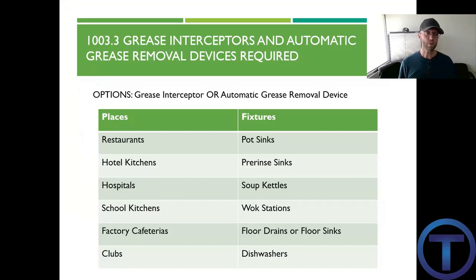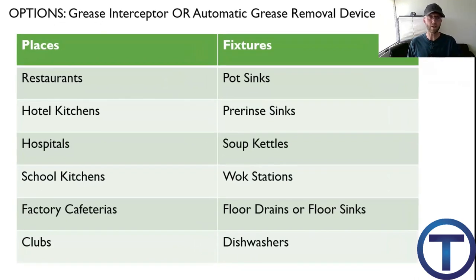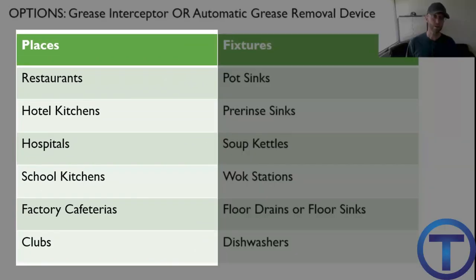Just a quick caution: if you're ever involved with servicing an operational grease interceptor like this, you need to understand that these are rancid and it will likely ruin your lunch. Section 1003.3.1 talks about grease interceptors and automatic grease removal devices, stating these are required — but you have those two options. Some of the places you'd be required to install them include restaurants, hotel kitchens, hospitals, school kitchens, cafeterias, and clubs — places where you mass produce food and there's a lot of food waste and dishes.